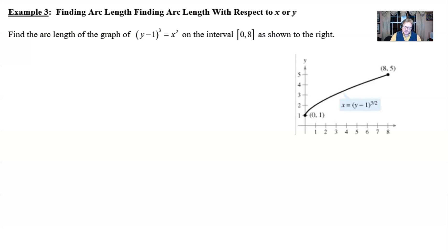The directions to example 3 say to find the arc length of the graph of (y-1)³ = x² on the interval [0,8] as shown to the right. And we see the graph which is nice and it does give us a little bit of insight into really what we're trying to find. Maybe we can even check our answer for reasonableness when we're all finished.